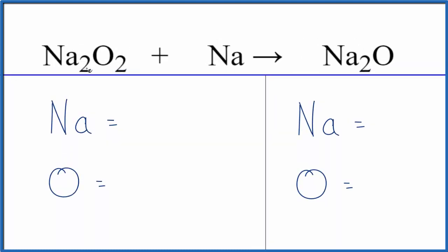So if we count the sodiums up, we have two sodiums here. But don't forget, we have the one sodium out here. So we have three sodium atoms, then two oxygens. Product side, two sodiums and just one oxygen.